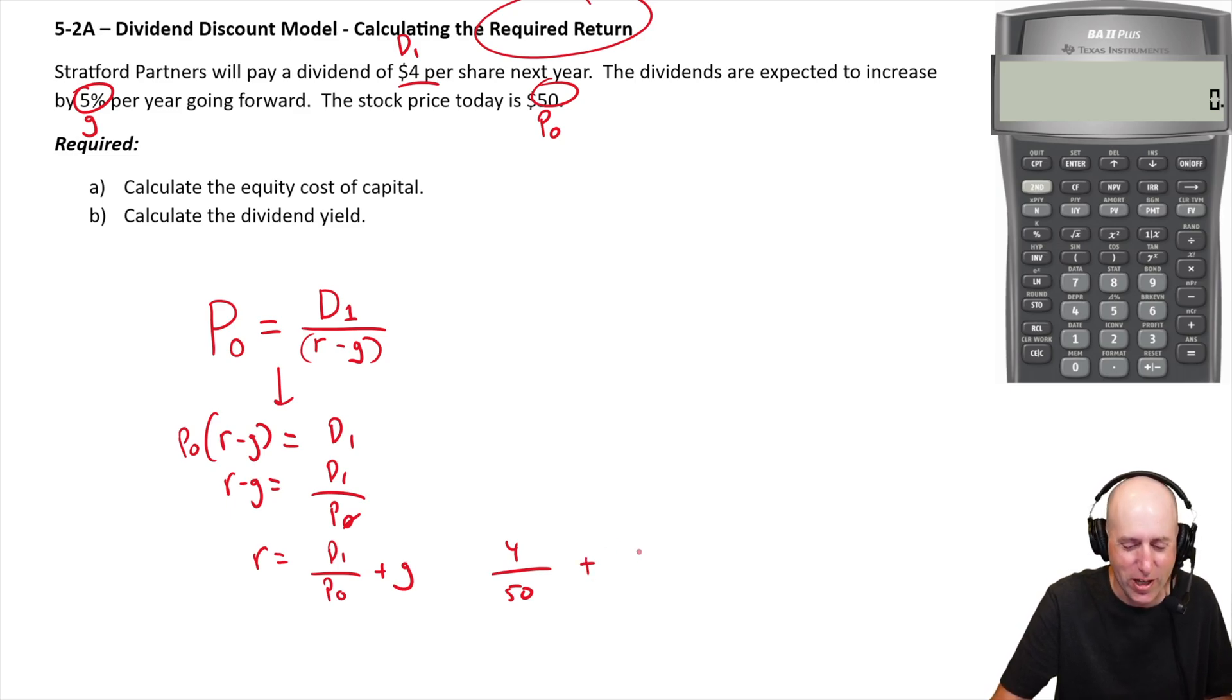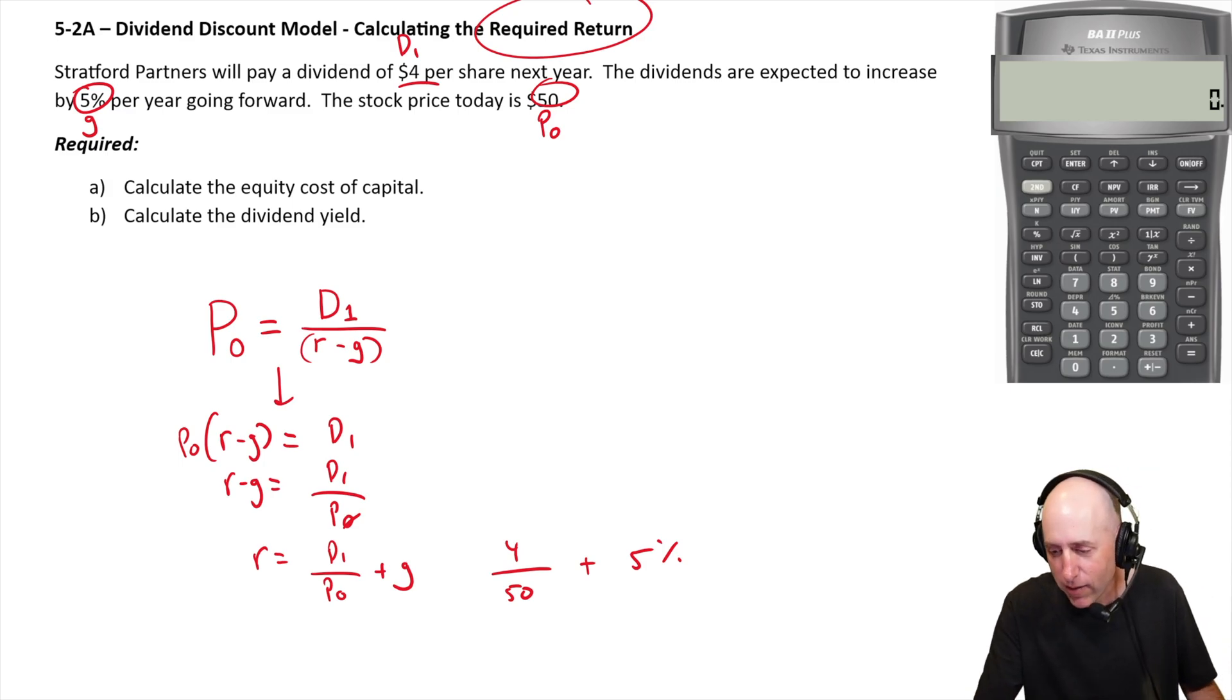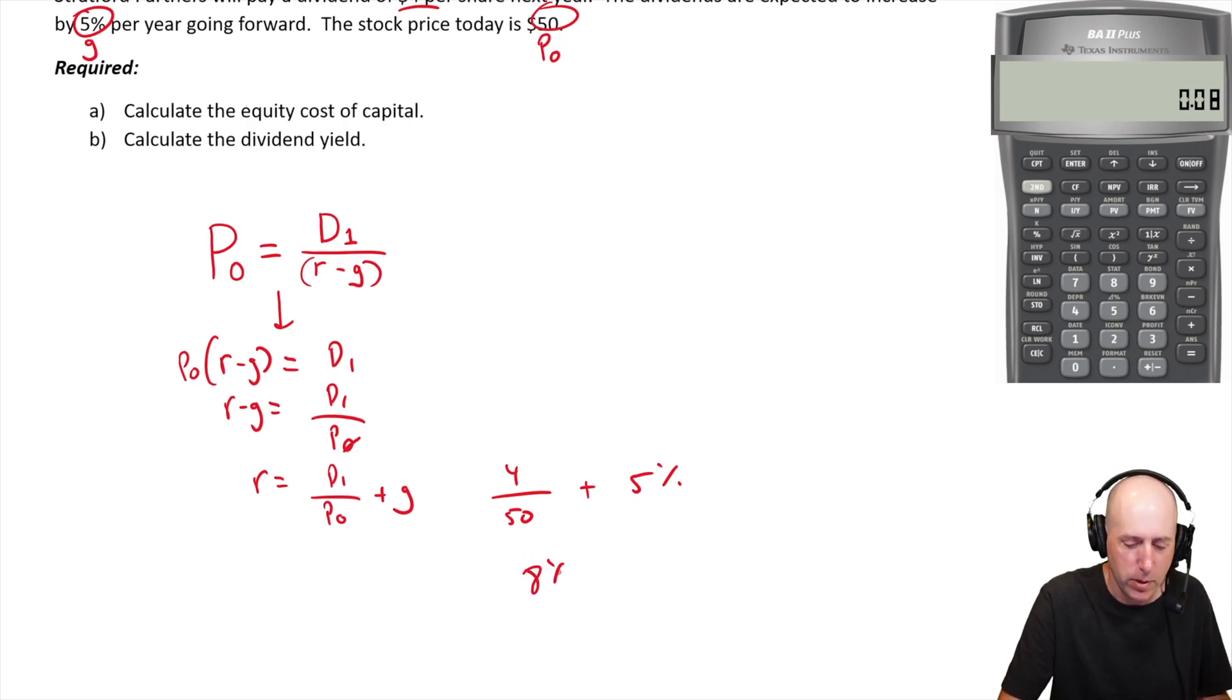Plus G. There's nothing worse in my video making career than when I say the right thing and I write the wrong thing and I get the answer wrong. I have to redo the video. Okay. Four divided by 50, it's going to be 0.08. So I get 8% plus 5% equals 13%. Our equity cost of capital is 13%.